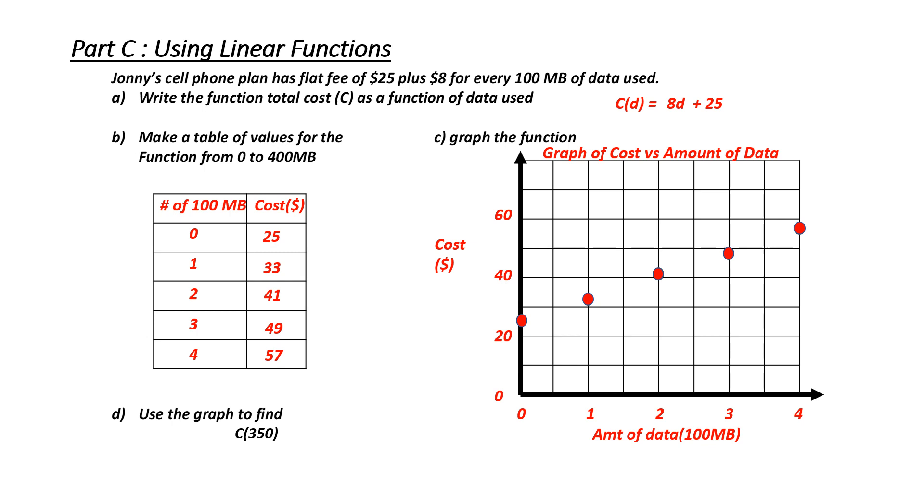Part D. Use the graph to find C of 350. So, basically, instead of using the equation, what I need to do is find an input value of 350, or 350 megabytes. I go to 350, and I draw a vertical line up to, if we had drawn a line in between these points, where it would have crossed. I now draw a horizontal line across and find the matching y value. So, what matching y value do I have for an input of 350? That means the C of 350 is equal to 53.